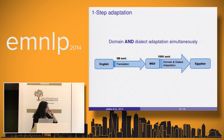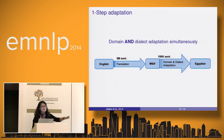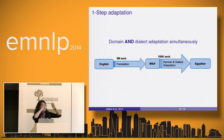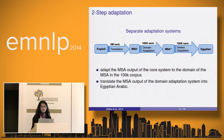The first adaptation system uses MSA as a pivot: the core system translates English into MSA, and then we use the 100K sentences to translate into Egyptian, combining domain and dialect adaptation in the same step. This works quite well compared to the baseline.